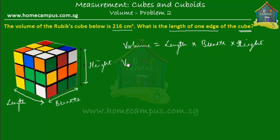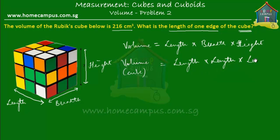The volume of a cube is equal to length times breadth. Now the breadth is the same as the length, so we write length times length, times the height. The height is again the same as the length, so we write that as length times length times length. So the volume of a cube is equal to length times length times length.